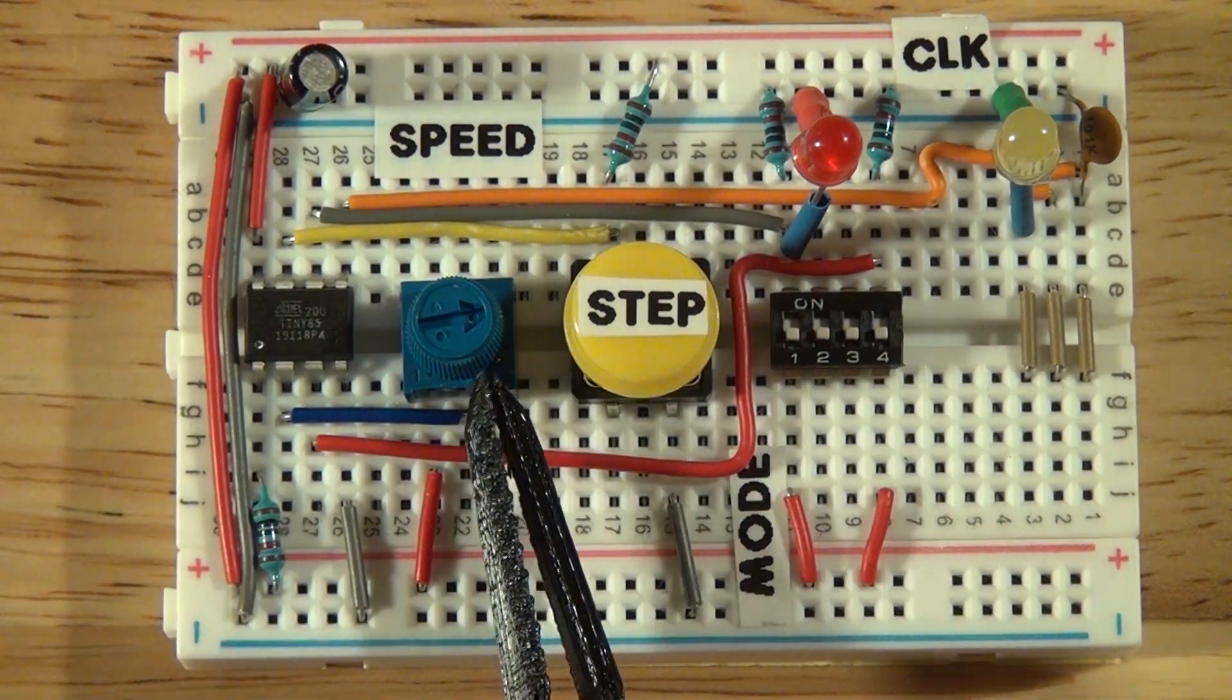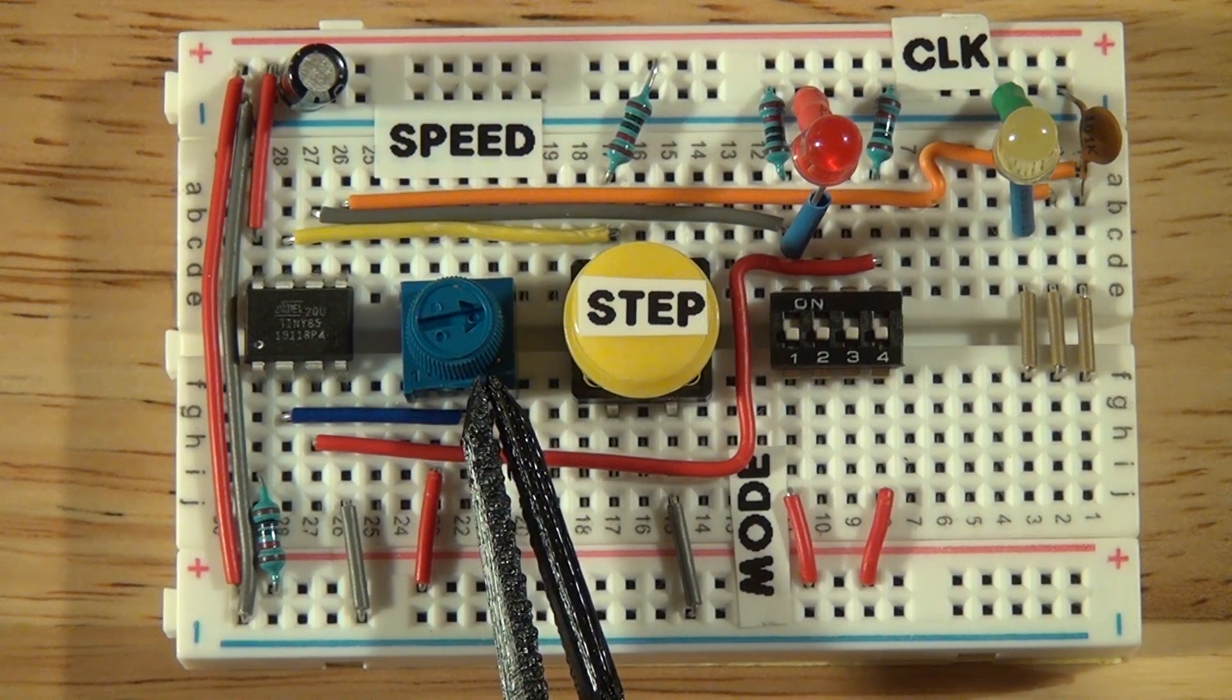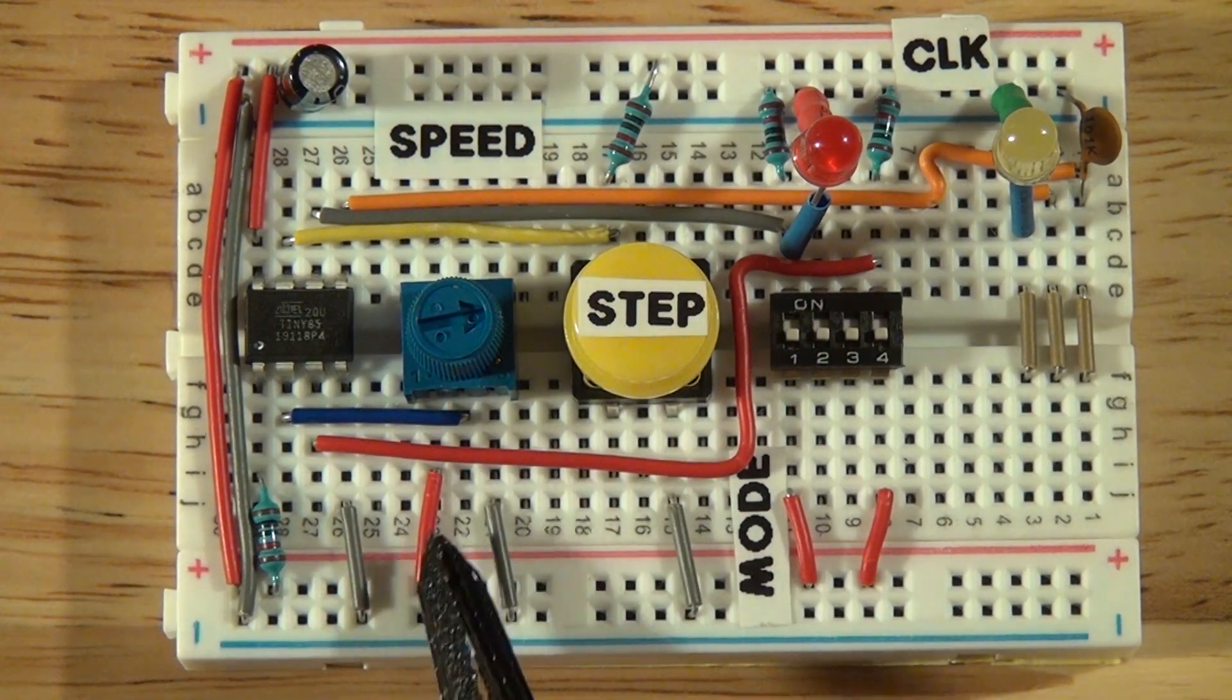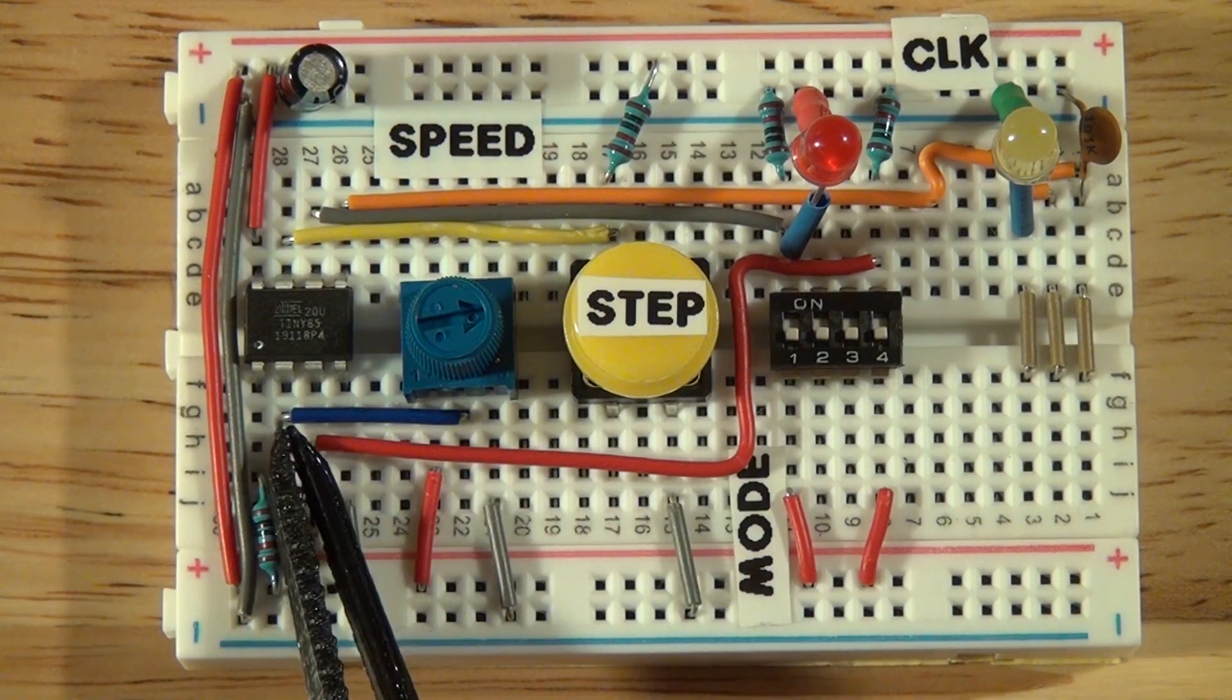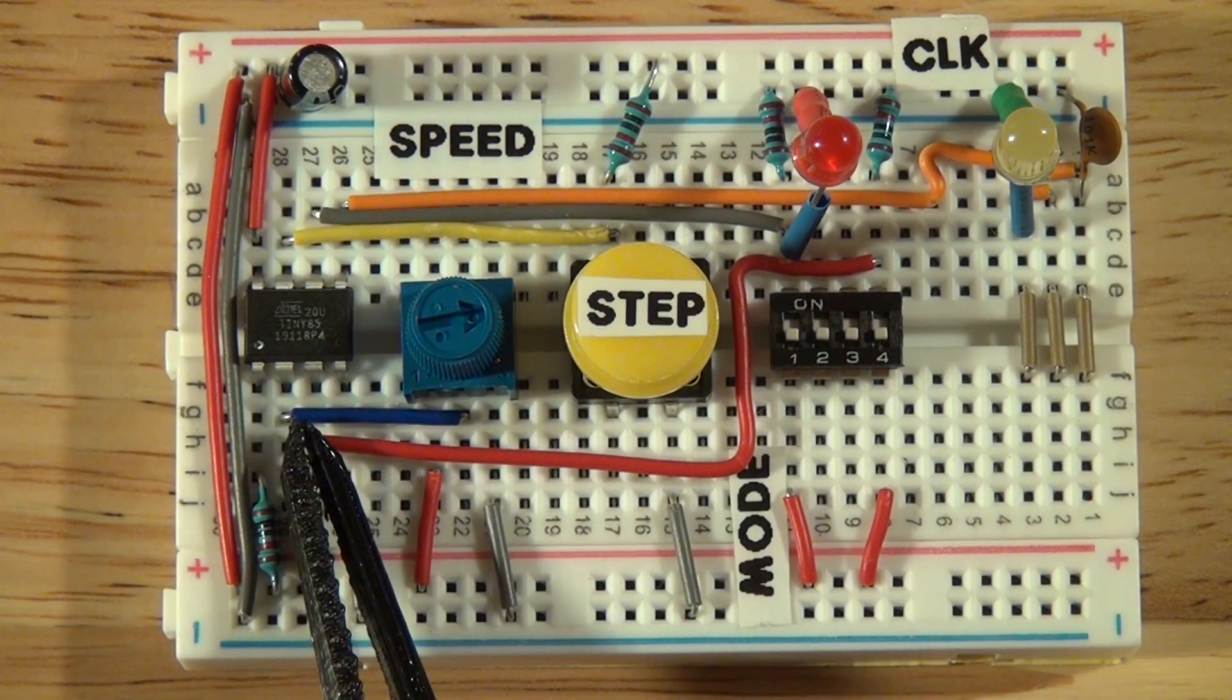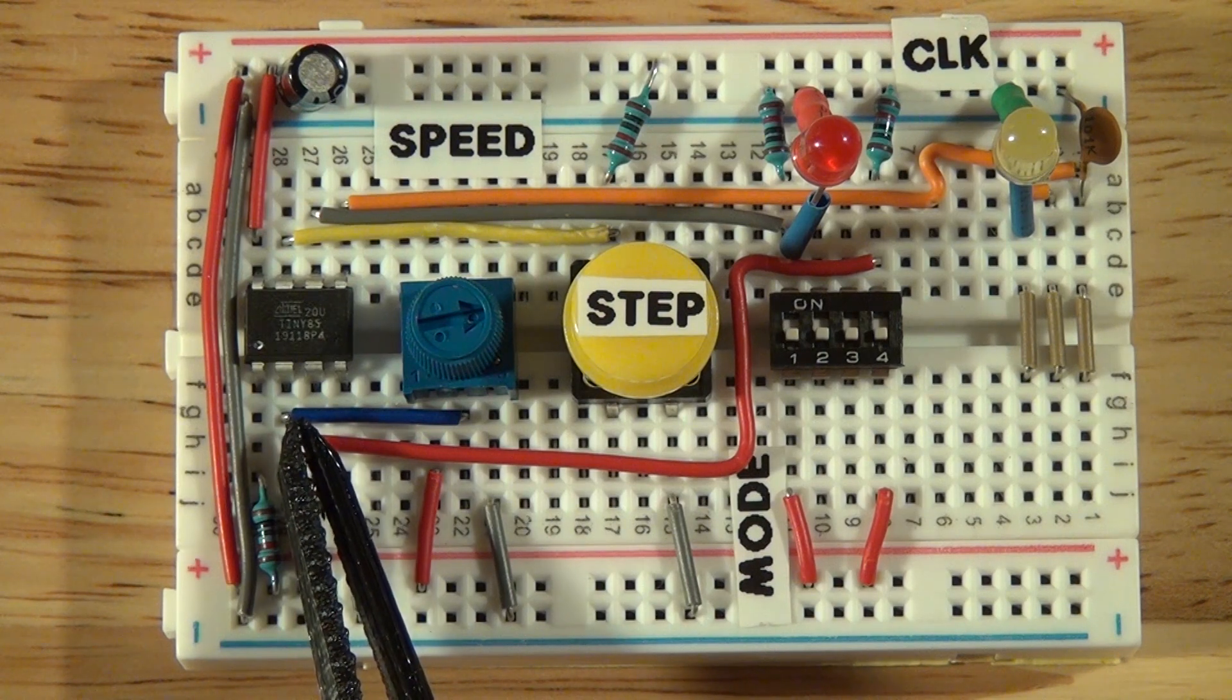First thing here is the potentiometer for the speed control, and that is just set up as a simple voltage divider, and the signal for that goes over to pin two here of the ATtiny.